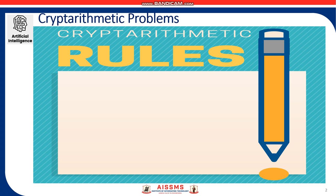The topic of this video is Cryptarithmetic Problems. Cryptarithmetic Problems is a type of constraint satisfaction problem where the digits of some numbers are represented by letters or symbols. The goal is to find the digits such that a given mathematical equation is verified.